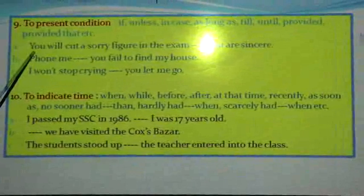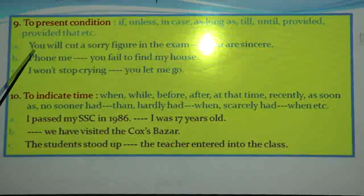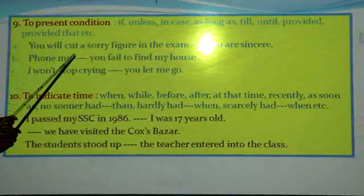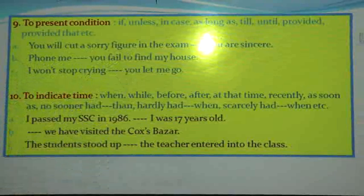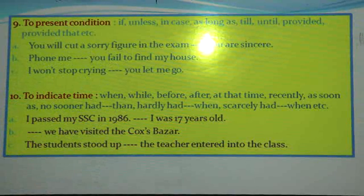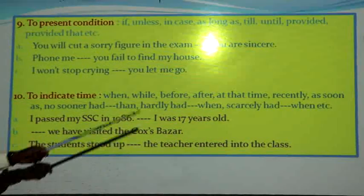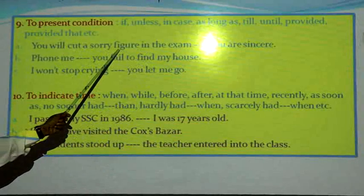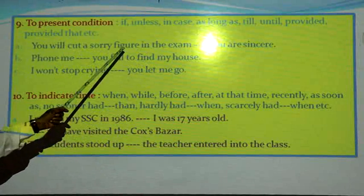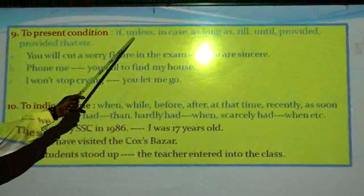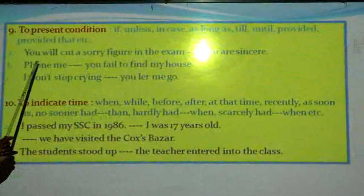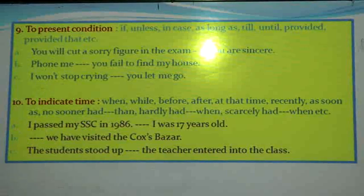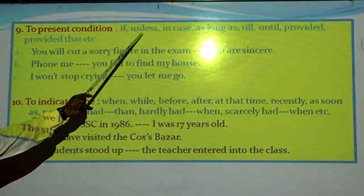Number A: 'You will cut a sorry figure in the exam. You are sincere.' Here you see, it is an affirmative sentence — 'you are sincere.' And we have to know 'you will cut a sorry figure' and 'you are sincere' is an opposite idea. So in this case, we have to use the sentence connector 'unless' in the gap. The sentence is: 'You will cut a sorry figure in the exam unless you are sincere.'